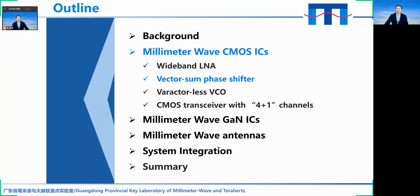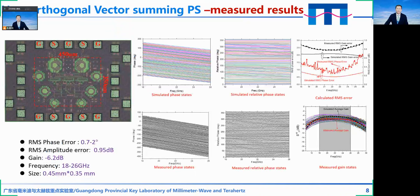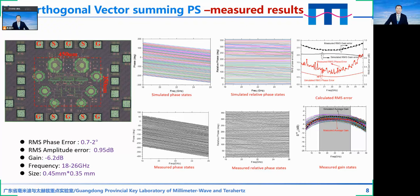Now let's have an introduction of a new design: the vector sum phase shifter. The phase shifter is a very important component in the phased array. Here it shows the photos of the designed phase shifter and its measured results. The RMS phase error ranges from 0.7 to 2 degrees. The RMS amplitude error is 0.95 dB. The gain is minus 6.2 dB. The frequency range is from 18 to 26 GHz, and the core chip size is only 0.45 by 0.35 millimeter squared.